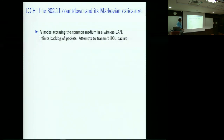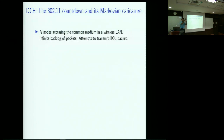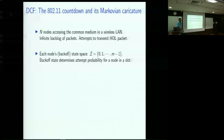Suppose there are n nodes in the system all accessing a common medium — those are like the n particles. I'm also going to assume that the queues are infinitely backlogged at each of these nodes, so each of the nodes always has a packet to send. Each node has a backoff state, and I will give these names: 0, 1, up to m minus 1. There are a total of m backoff states.